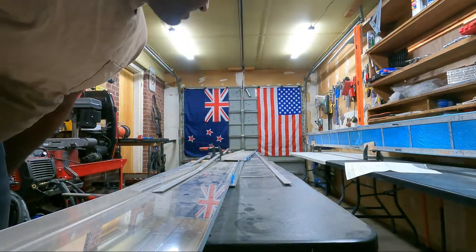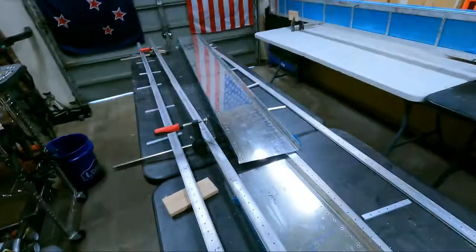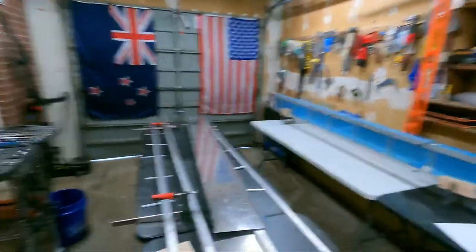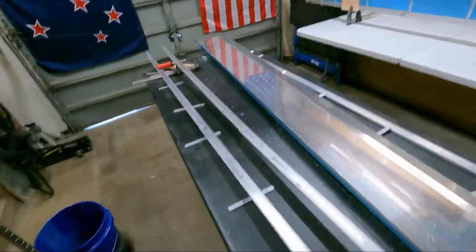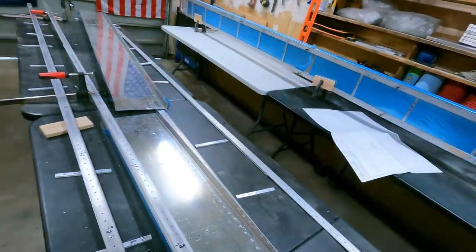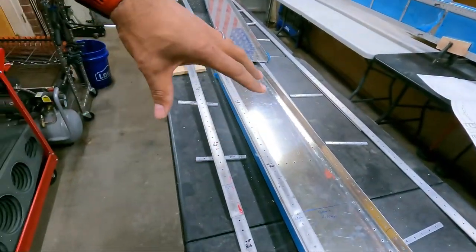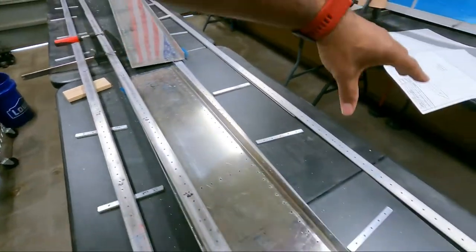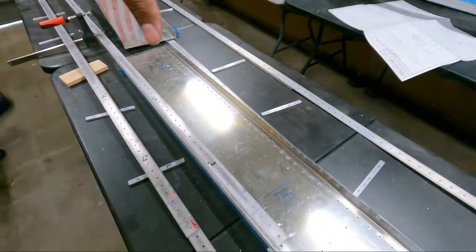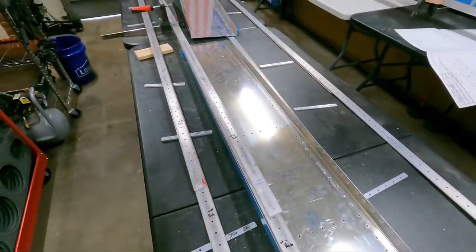That was surprisingly more difficult than I thought. I'm trying to just keep everything in order. I have it labeled but for my own sanity, I just want to make sure that I can line it back up. I'm gonna keep top components on this side, bottom components on this side, spar webs in the middle.